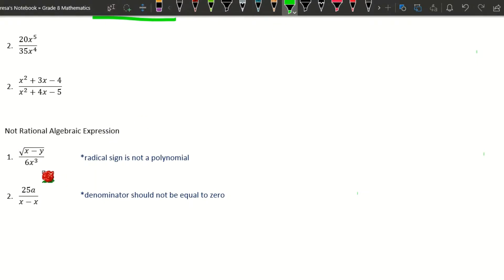Another one, we have 25a/(x - x). This is not a rational algebraic expression because our denominator, x - x, is equal to zero. And in a rational algebraic expression, the denominator must not be equal to zero.